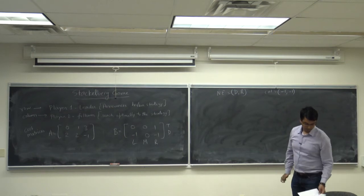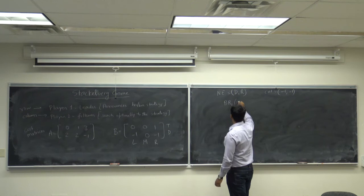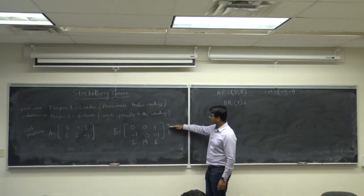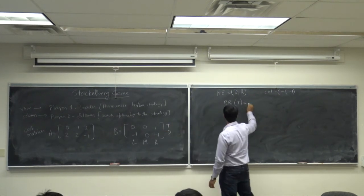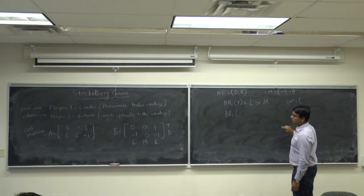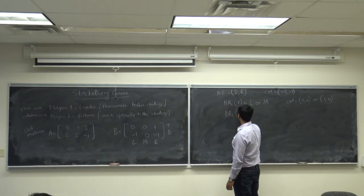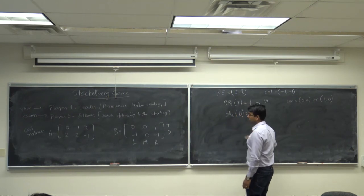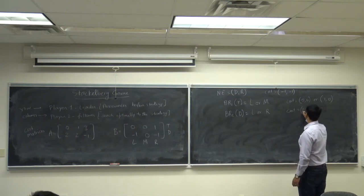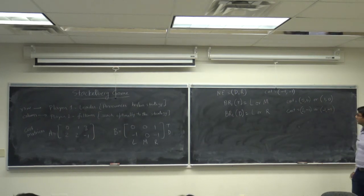Let's say player one is the leader. If player one picks T, the best response of player two is L or M — equal costs. The cost is (0, 0) or (1, 0). If player one picks D, the best response of player two is L or R, with costs (2, minus 1) or (minus 1, minus 1).